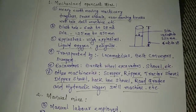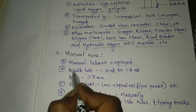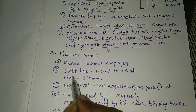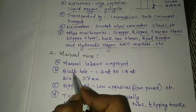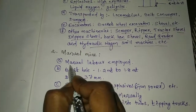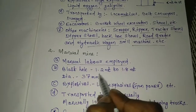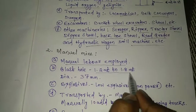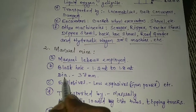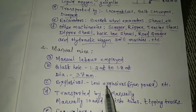The second type is manual mine. In this mine, generally ore and overburden are excavated manually using manual labor. Blast hole depth generally varies from 1.2 meters to 1.8 meters, and diameter is also up to 37 mm.